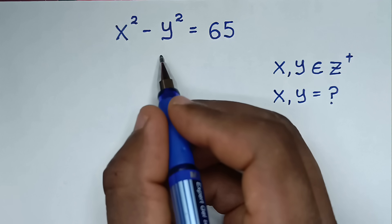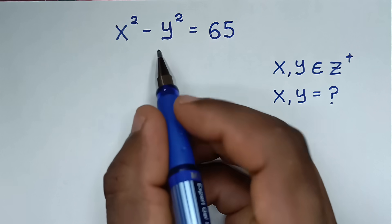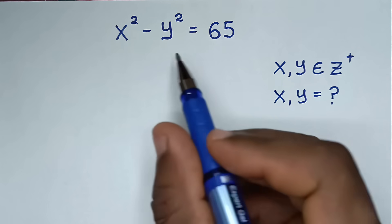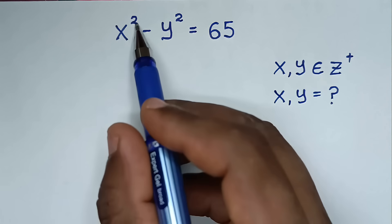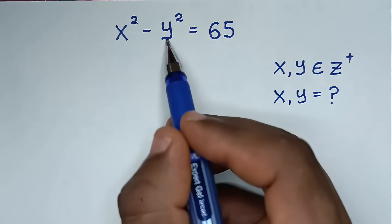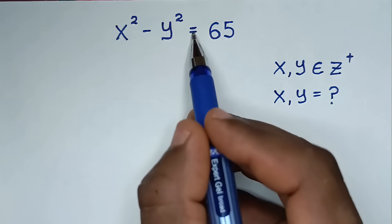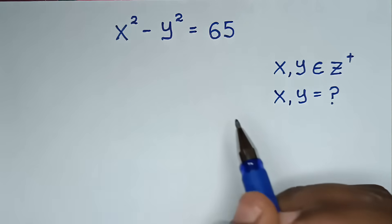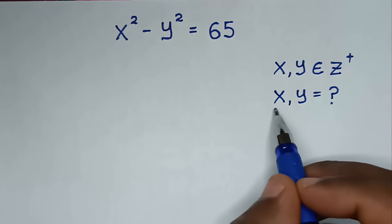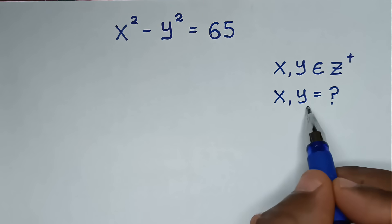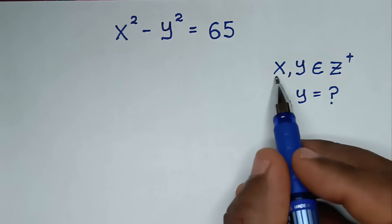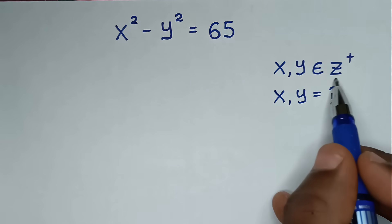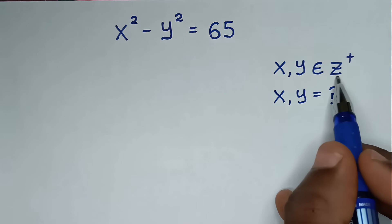Hello, you are welcome to solve this math problem, which is x squared minus y squared is equal to 65. Find the values of x and y such that x and y are elements of the positive integers.